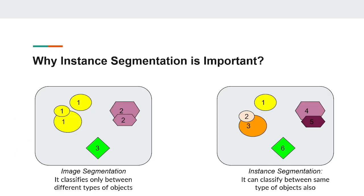Here we will see the difference between image segmentation and instance segmentation. The left side depicts image segmentation and the right side shows instance segmentation. In image segmentation, there are only three types of classes, and it classifies all objects of the same type — like circles and squares — into the same class. The problem is we also want to differentiate between objects of the same class, which image segmentation alone cannot do. For this reason, we need the instance segmentation approach as well.